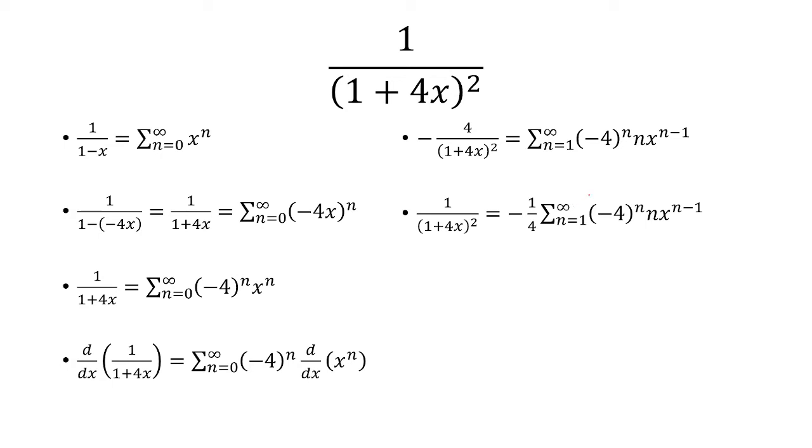Because really, you can think of this as negative 4 to the n over negative 4. They have the same base, so you just subtract the exponents. So that's going to turn into negative 4 to the n minus 1 power.